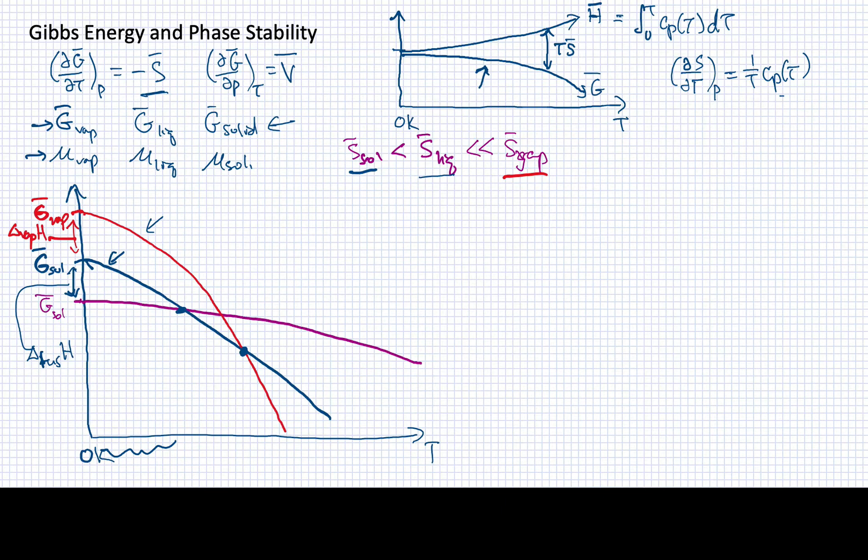So at very low temperatures, we know that this substance is going to be a solid. And in fact, we know it from this diagram also because the phase that has the lowest Gibbs energy at any segment of this diagram is going to be the one that is the most stable phase. So most stable phase corresponds to the phase with the lowest molar Gibbs energy.